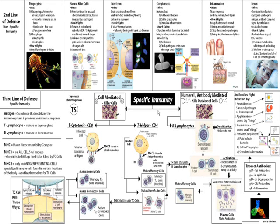When the TC cell finds those infected cells, it will release three things into the infected cell: lymphotoxin, cytokine, and perforin. Lymphotoxin will disrupt cell metabolism — specifically, it will inhibit the ability of that cell to make ATP.